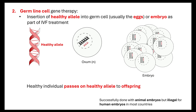Although germline cell gene therapy has been successfully done with animal embryos, it is illegal to perform on human embryos in most countries. There are ethical and medical concerns, as it could lead to people attempting to design the type of offspring they wish to have. Additionally, because IVF is involved, there is the question of what happens to embryos that don't contain a successful insertion of the healthy alleles. There will always be ethical implications when genetically modifying somatic body cells or germline cells.